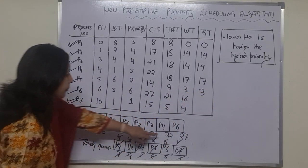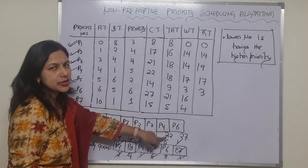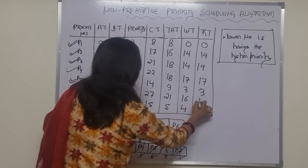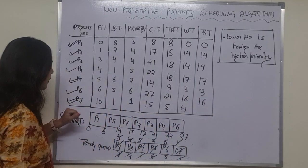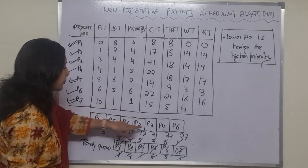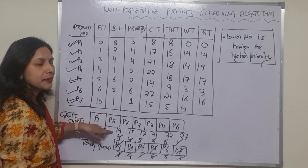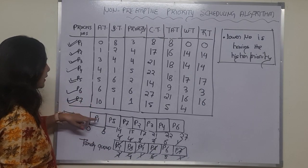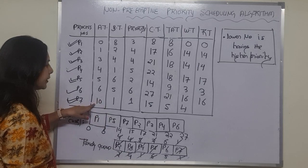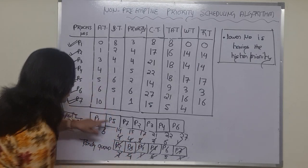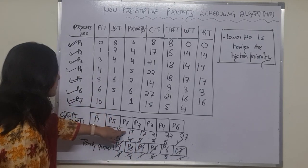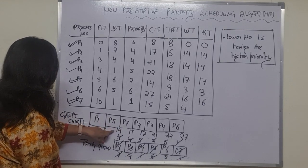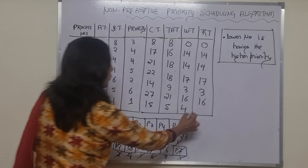For P6, the first allotment time is 22: 22 − 6 = 16. For P7, the first allotment time is 14: 14 − 10 = 4.